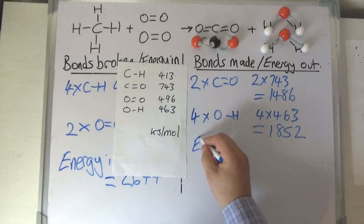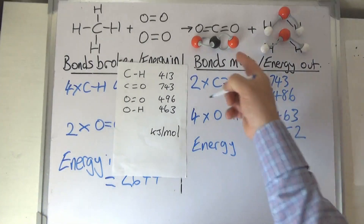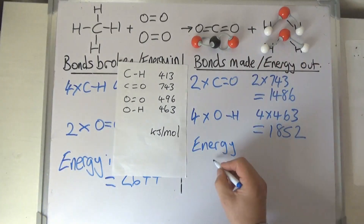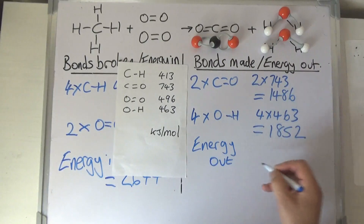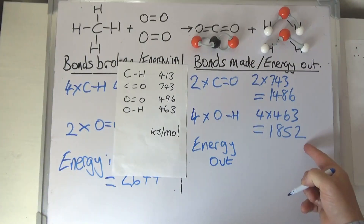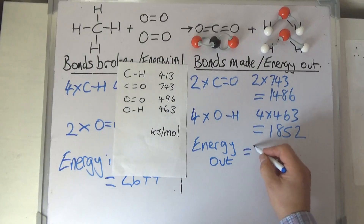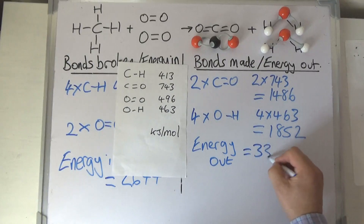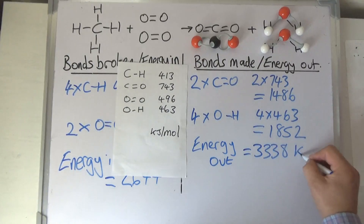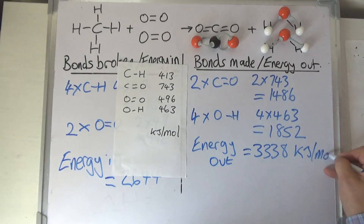Four times O–H, which is four times 463, comes to 1,852 kilojoules per mole. So the total energy out from all of those bonds forming to make these product molecules — total energy out — is 1,486 plus 1,852, and that comes to 3,338 kilojoules per mole.